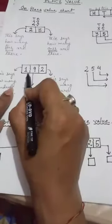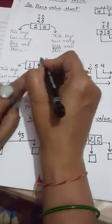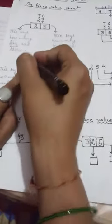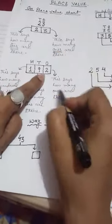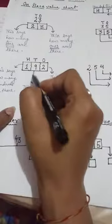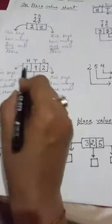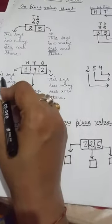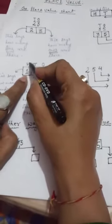Let's look at the number 192. This is the place value of ones, this is the place value of tens, and this is the place value of 100. This position says how many ones, this says how many tens, and this says how many hundreds. So: 2 ones, 9 tens, and 1 hundred.